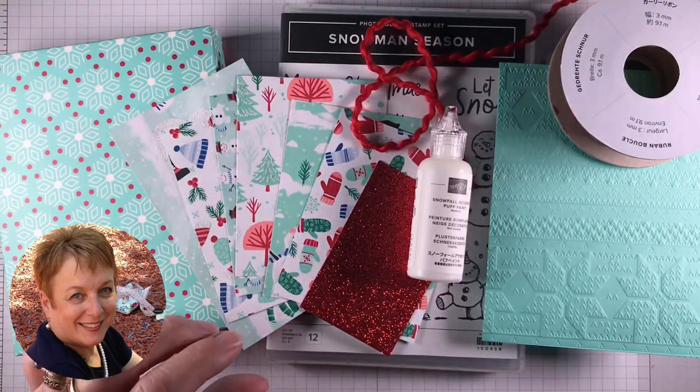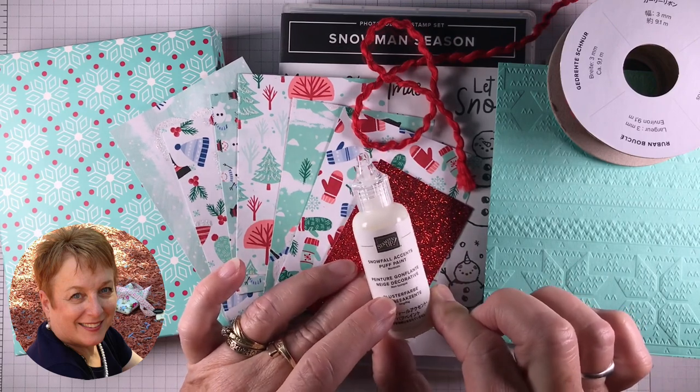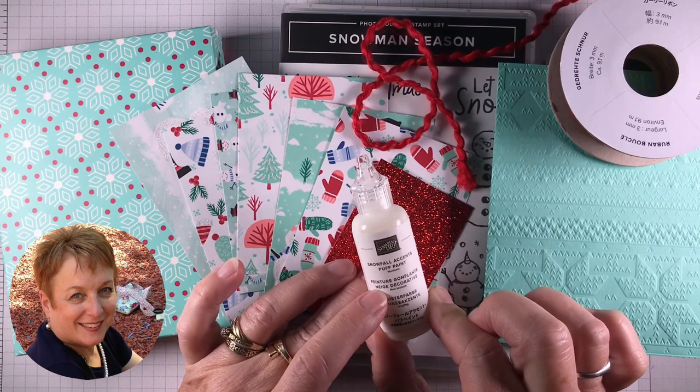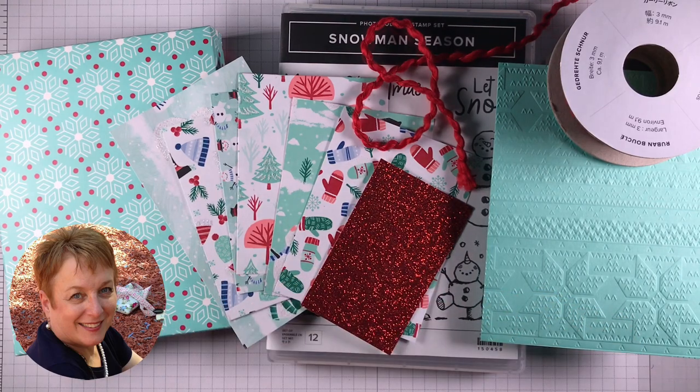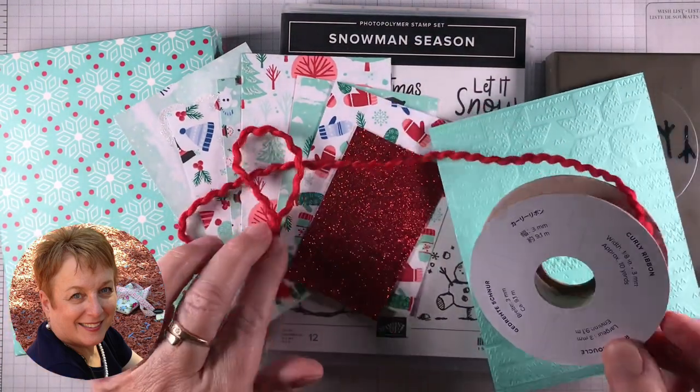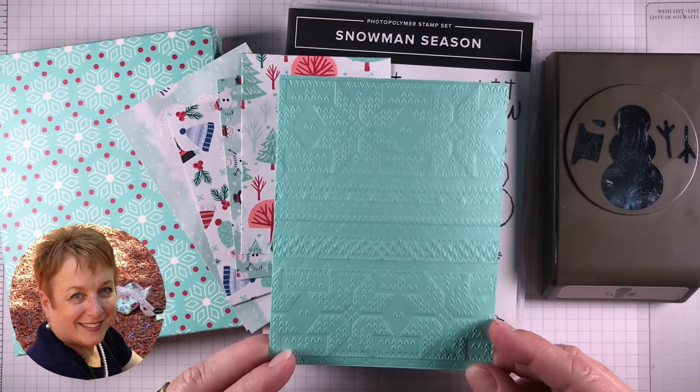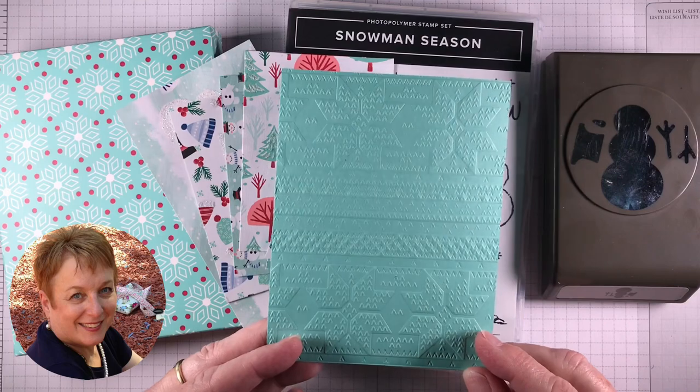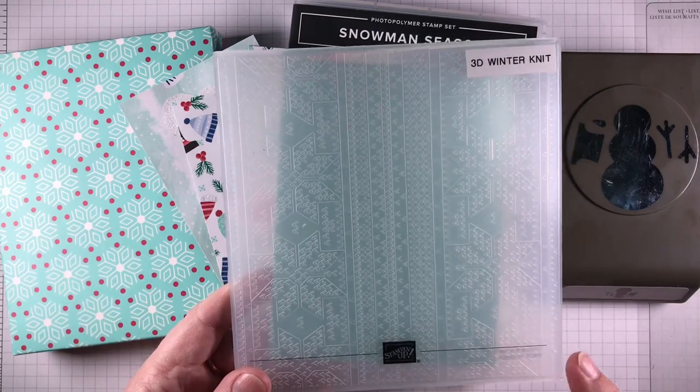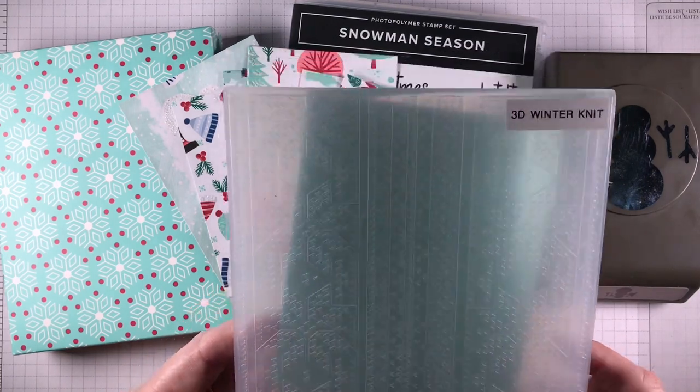Part of that Let It Snow suite comes with the Snowfall Accents Puff Paint. I'm not going to be using this today, but stop over on my blog on Saturday and you'll see a really cute little card used with the snow fluff. Another part of that suite is this fun corded-like ribbon, and this is the Winter Knit embossing folder. This is what it looks like. It's a 3D Winter Knit Stampin' Up embossing folder. Now with the new 3D ones, they're a little bit thinner than the old dynamic folders and thicker than a regular embossing folder.